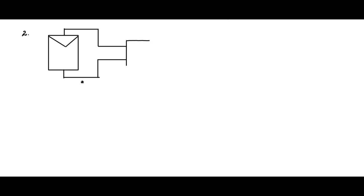Let me now discuss another topology. Here, I will remove the DC-DC converter plus unfolding stage and replace it with a single power stage called the inverter stage — it is a DC to AC converter. We have the photovoltaic module connected as usual to a DC-DC converter, whose output is connected to a capacitor with a buffer capacitance that acts as an input to the inverter.